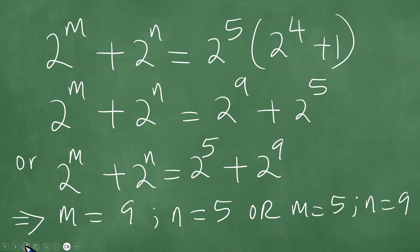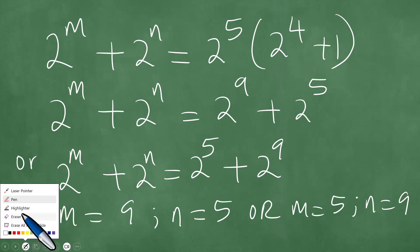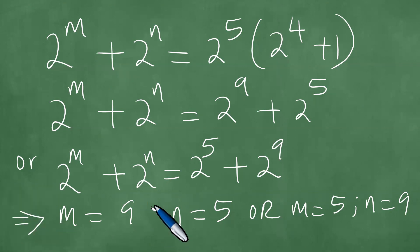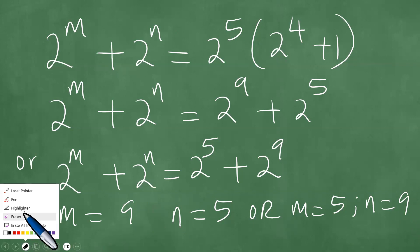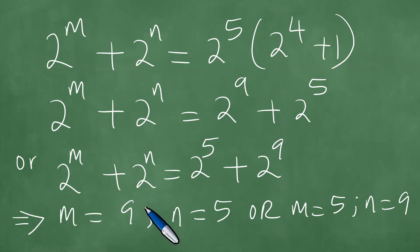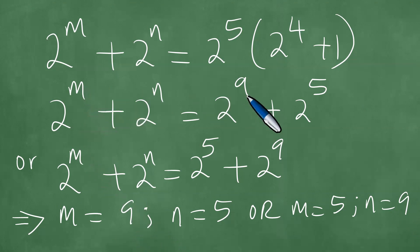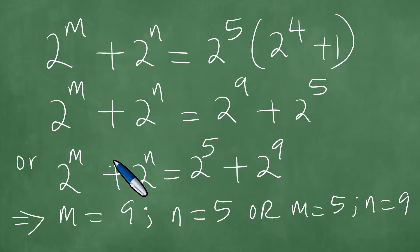In essence, these become true simultaneously. We can write: in the first case, M is 9 and N is 5, or M is 5 and N is 9.